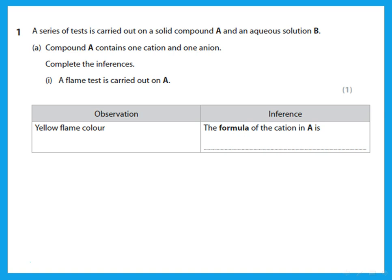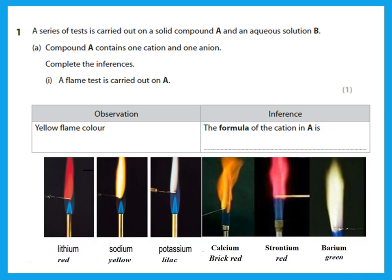A series of tests is carried out on a solid compound A and an aqueous solution B. Compound A contains one cation and one anion — remember, cations are positive ions and anions are negative. A flame test is carried out on A and gives a yellow flame. You should know that the yellow flame corresponds to the sodium ion, Na⁺ — not sodium metal, it is the sodium ion with one positive charge.